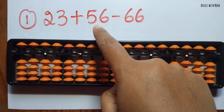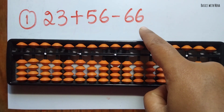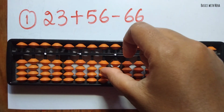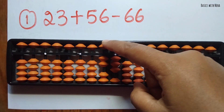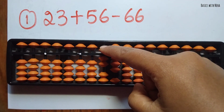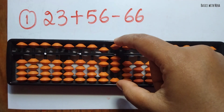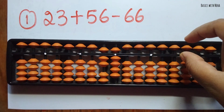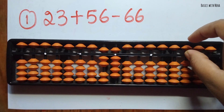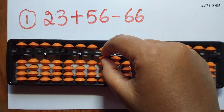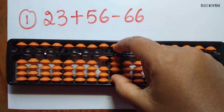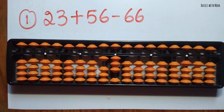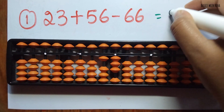23 plus 56 minus 66. First take 23, now we should add 56 — you can add 5 directly in the 10's rod and 6 directly in the 1's rod. Now we should minus 66 — minus 6 directly in the 10's rod and minus 6 in the 1's rod. The answer is 13.